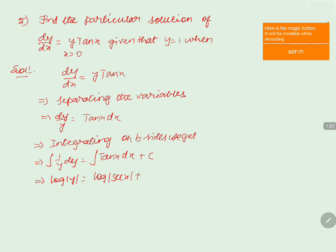Since both terms are in the form of log, the constant c can be replaced by log|c|. So log|y| = log|sec(x)| + log|c|. Using the property log(a) + log(b) = log(ab), this becomes log|y| = log(c·sec(x)).